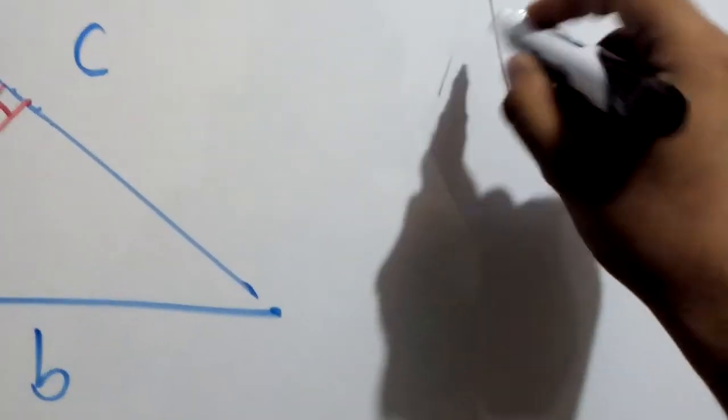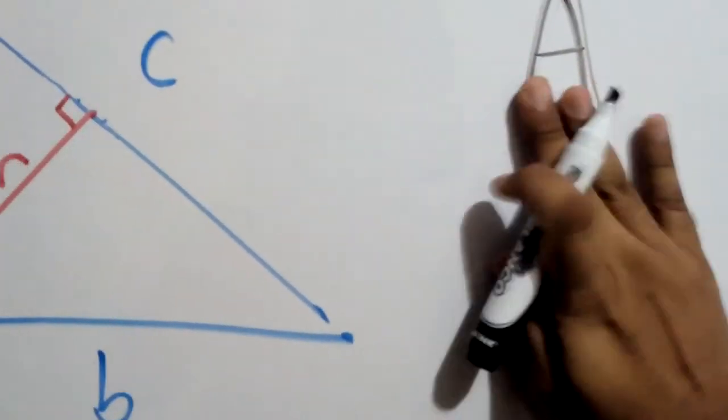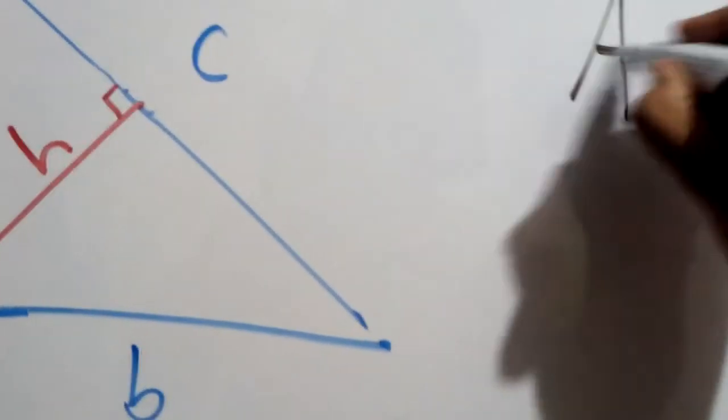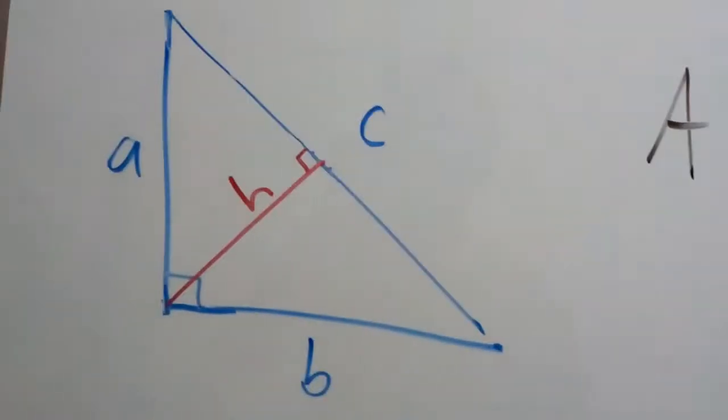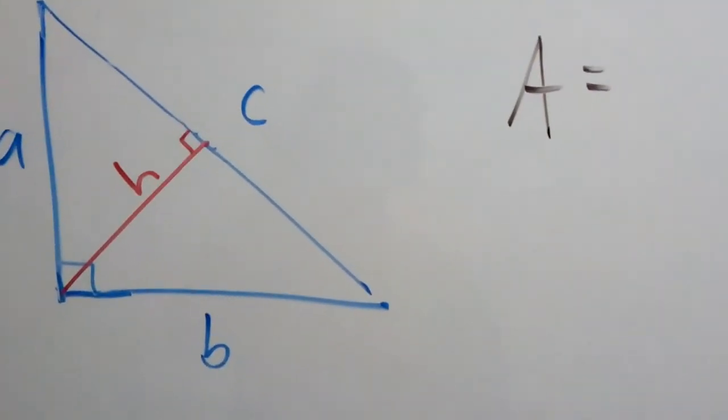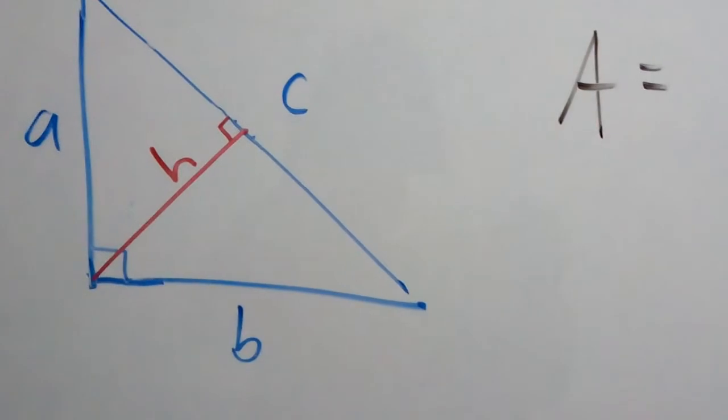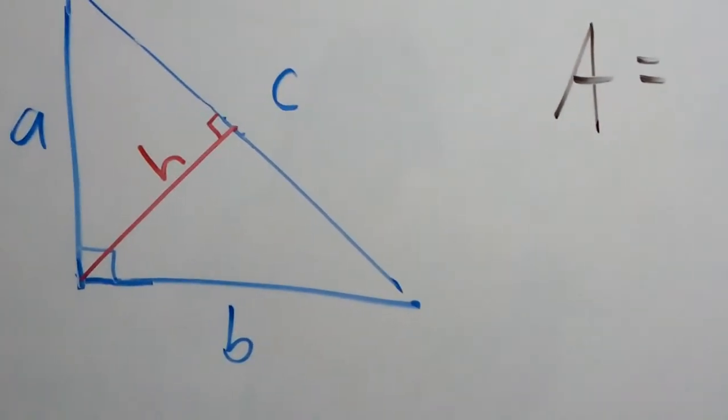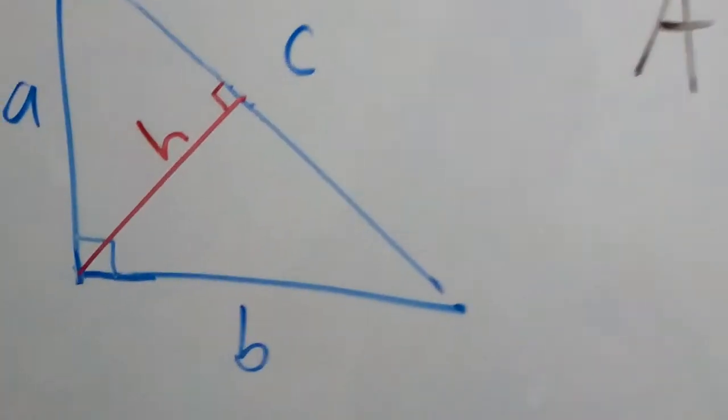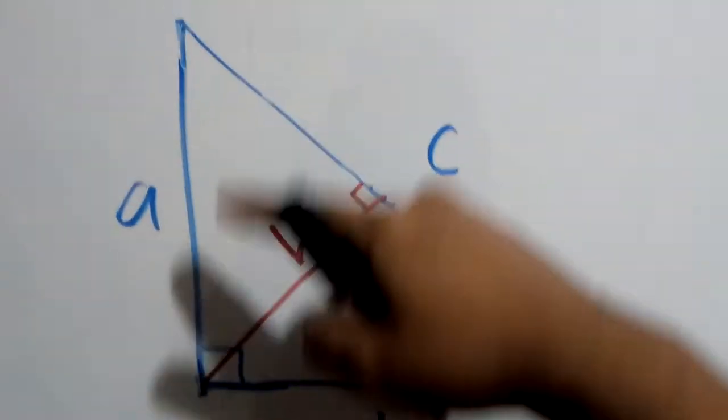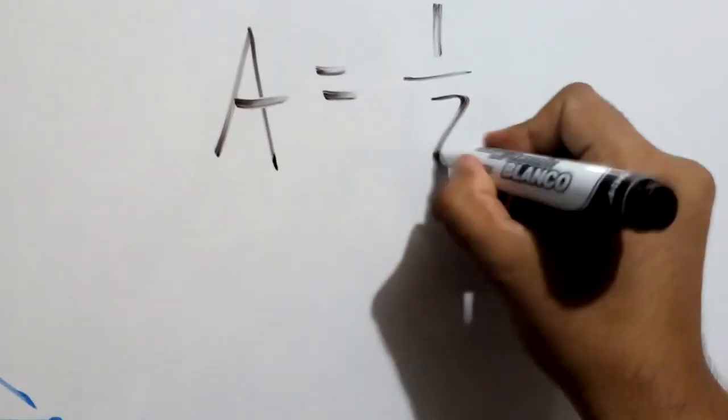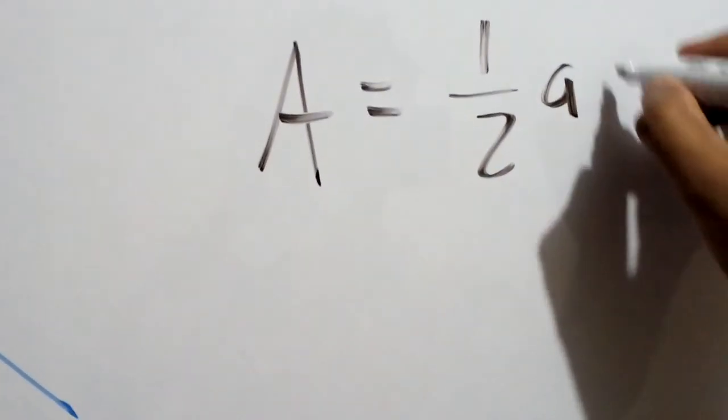So it's a triangle, and of course we will begin just by writing the area of the triangle. Something maybe you think a little bit weird because we want to talk about the Pythagorean theorem, but this will be clear in a minute. So the area, you know that the area of a triangle is half of the base multiplied by the height. So in this case, you can think of this being the base and this being the height.